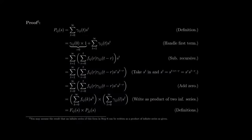Here is the proof. Consider P_ij(s). From the definition, that is the probability of transitioning from state i to state j in T steps, multiplied by the argument s to the power T, summed over T from 0 to infinity.